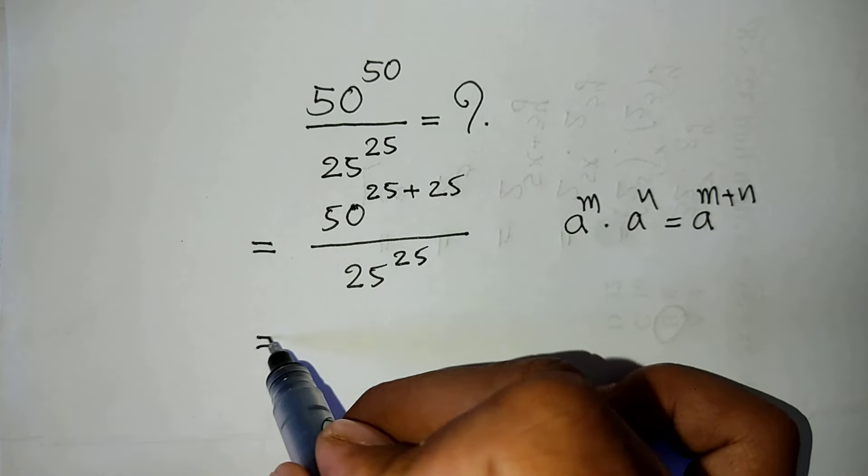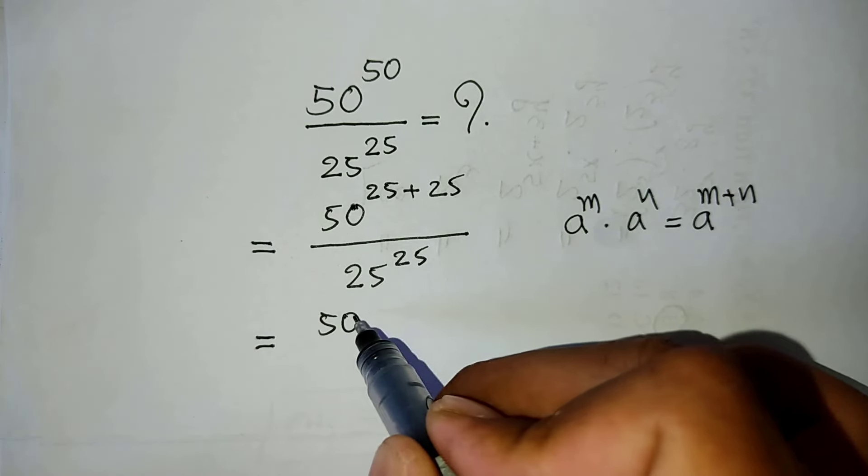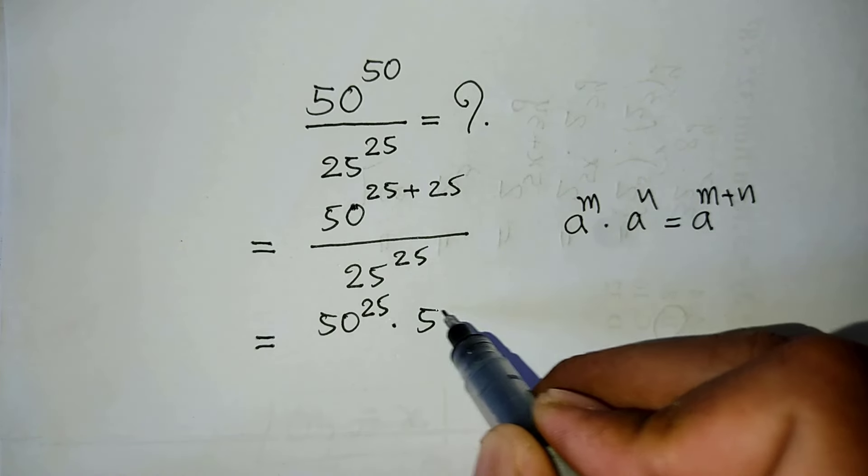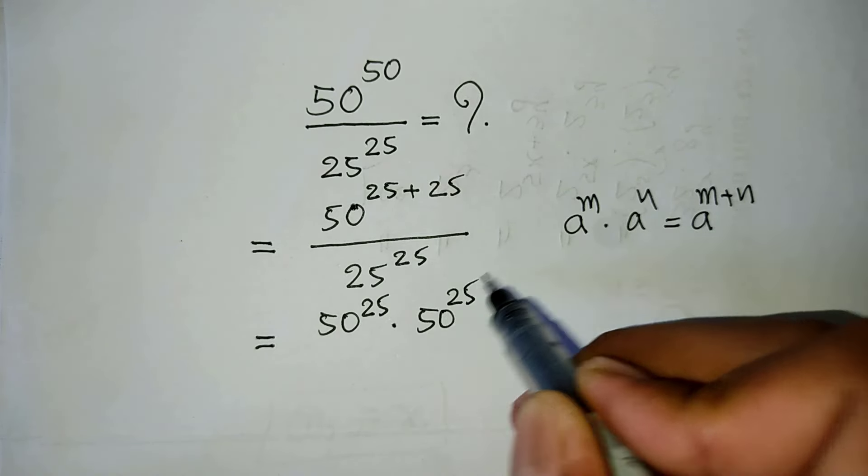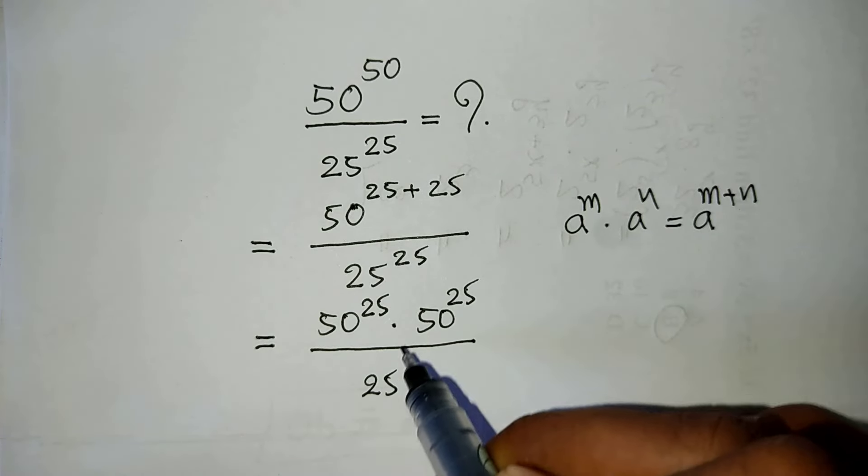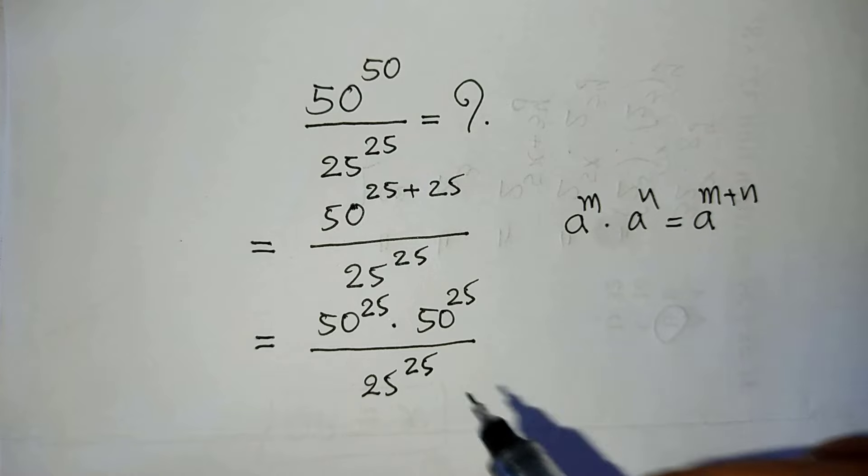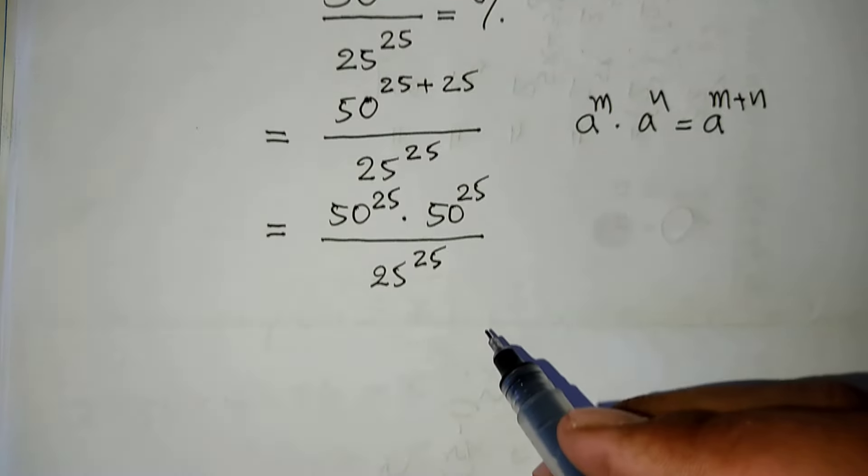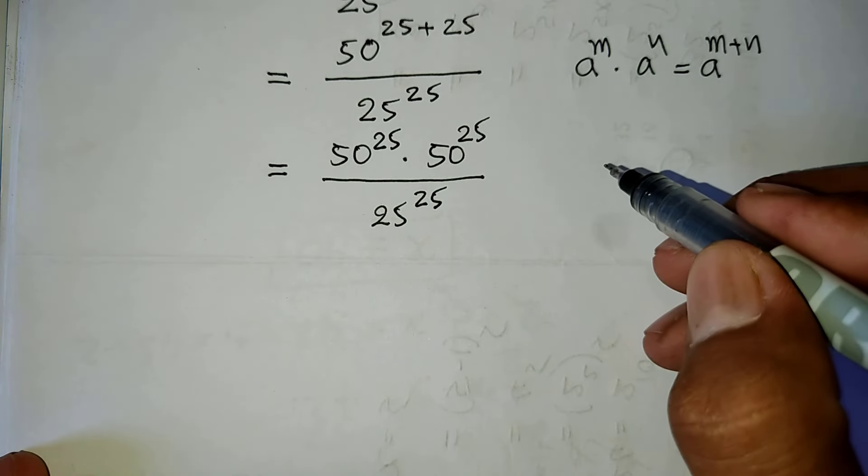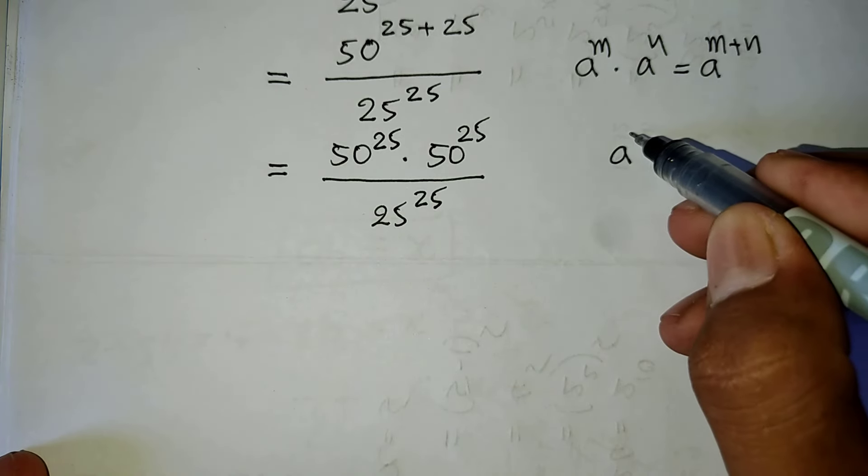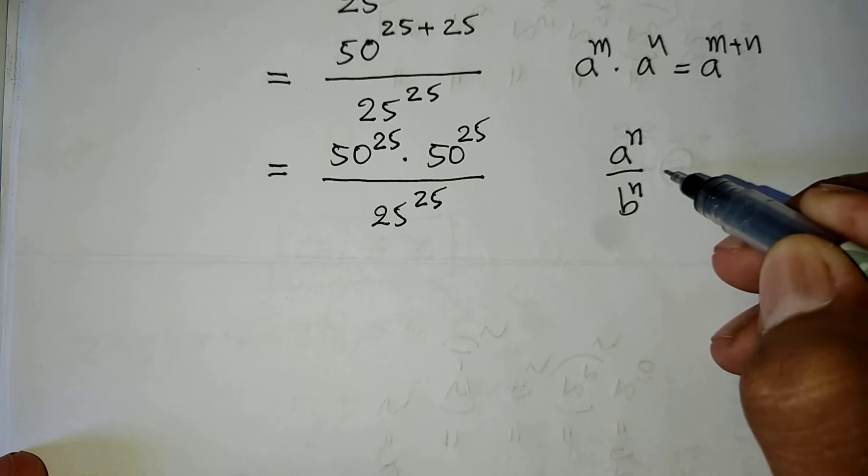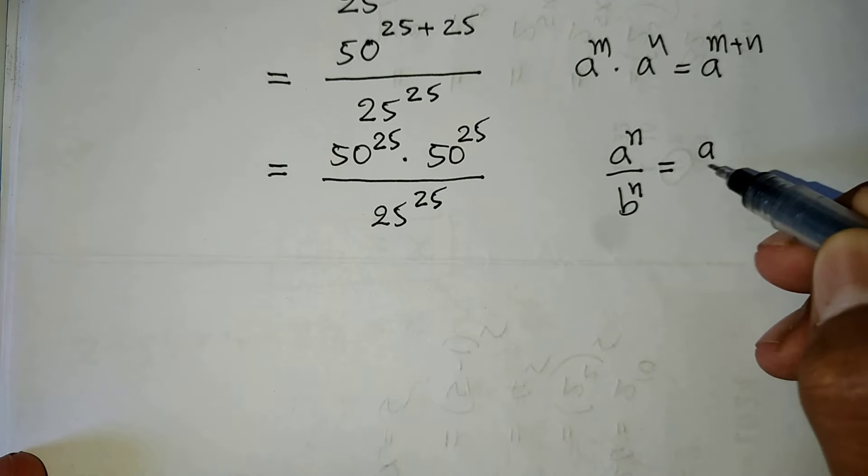Now it's equal to 50 to the power of 25 times 50 to the power of 25 divided by 25 to the power of 25. Here is the same exponent, so we use the formula a to the power n divided by b to the power n equals a divided by b all to the power n.